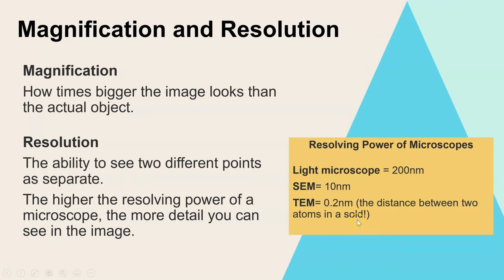To show the comparison: the resolving power of the light microscope is 200 nanometers, the scanning electron microscope is 10 nanometers, and the transmission electron microscope is 0.2 nanometers. That means you can still see two objects as separate when they are only the distance of two atoms apart — so that is a very very high resolving power.